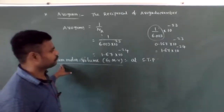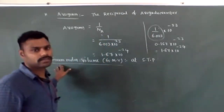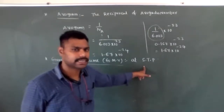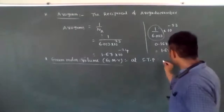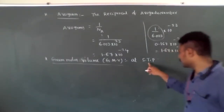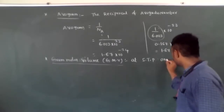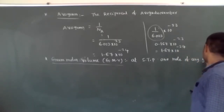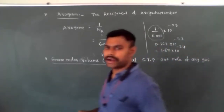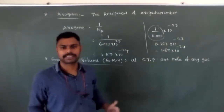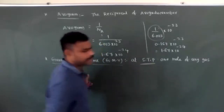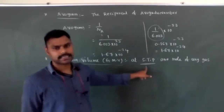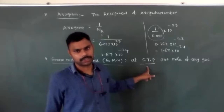Gram-Molar volume: at STP — standard temperature and pressure — one mole of any gas occupies a fixed volume. One mole of H2, one mole of CH4, one mole of CO2, one mole of O2 — the gas must be at STP: temperature 0°C or 273 K, pressure 1 atmospheric pressure.